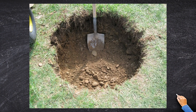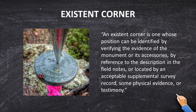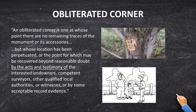Let's explore the definitions of these three terms — note that 'non-existent' is a fake term. The BLM manual says an existent corner is one whose position can be identified by verifying the evidence of the monument or accessories. Did we find the monument? No. Did we find any accessories? No. We do not have an existent corner.